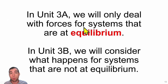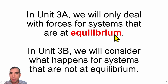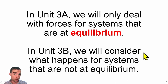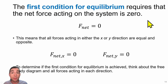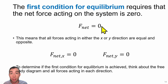In unit 3A we're only going to deal with systems that are at equilibrium. In unit 3B we'll move on to systems that are out of equilibrium. Equilibrium essentially means that all of the external forces acting on your system cancel out or balance out.